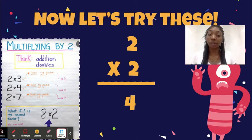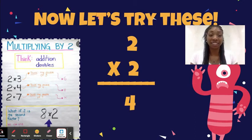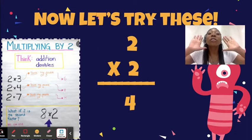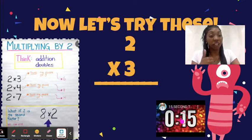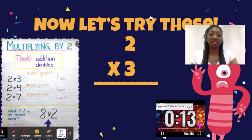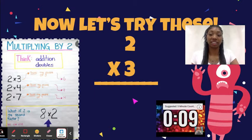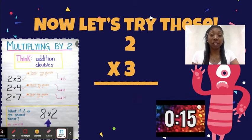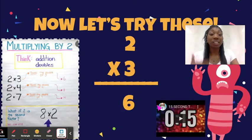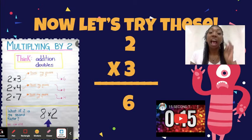Are you ready to try some on your own? Ms. Dennis is going to time you — 15 seconds to solve the rest of the problems. Try 2 times 3. Think about the doubles — which number would you double? Time's up. 2 times 3 is 6. You had to double the 3, and 3 plus 3 is 6, which means 2 times 3 is 6.